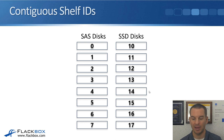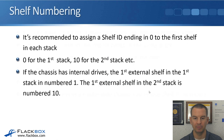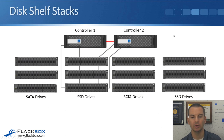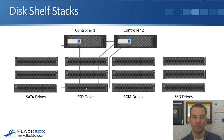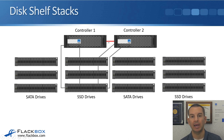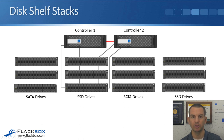Looking back at the diagram with four stacks, the numbering would be 0, 1, 2 on the SATA drives, then 10, 11, 12 on the first SSD stack, then 20, 21, 22, then 30, 31, 32. If the chassis had internal drives, the chassis itself would be ID zero, the first stack would start at 1, 2, 3, and the remaining stacks would follow the normal plan: 10, 11, 12, then 20, 21, 22, then 30, 31, 32.